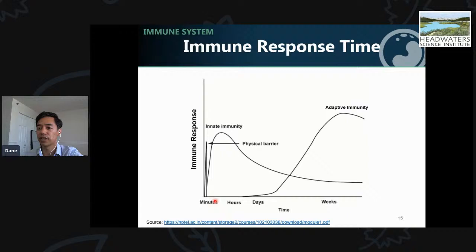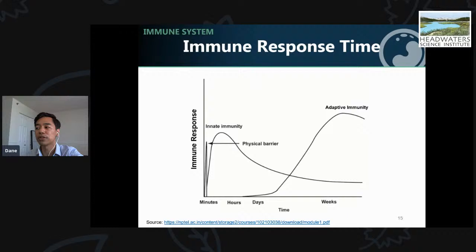Your adaptive immune system is much better at targeting things it recognizes as not you and can tailor its response to use the best tools to get rid of that infection. Your innate immune system is fast — on the order of minutes to hours — but your adaptive immune system is much slower and can take days to weeks to form a response. If the bacteria or virus overwhelms your innate immune system during that time, you can get really sick or maybe even die. But if the adaptive immune system kicks in, you'll be able to recover.